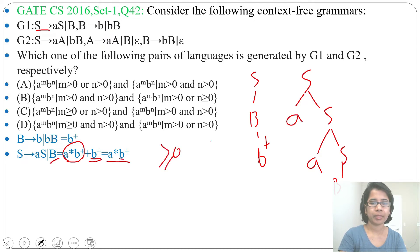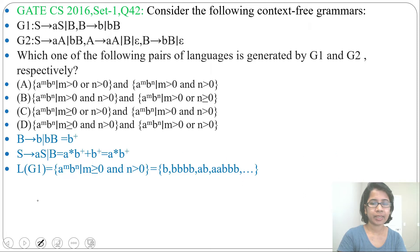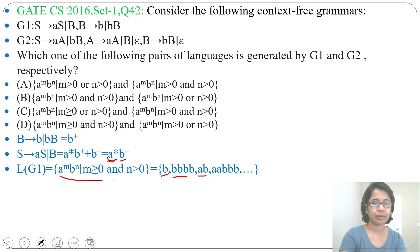Number of A should be greater than or equal to 0, and number of B should be greater than 0. So the language will be A^M B^N where M ≥ 0 (since it's Kleene closure, it can accept epsilon) and N ≥ 1 (positive closure, minimum 1 B). It accepts strings like B, BB, AB, AAB, AABB — any number of A followed by any number of B, minimum A is 0, minimum B is 1. Now check which option matches this language.